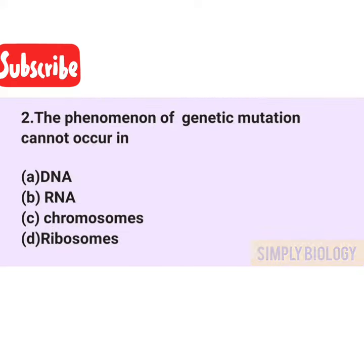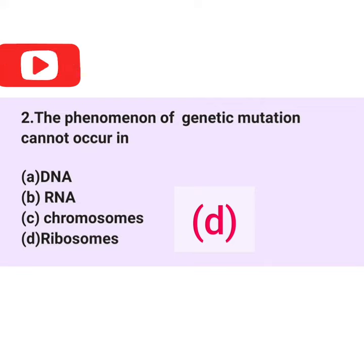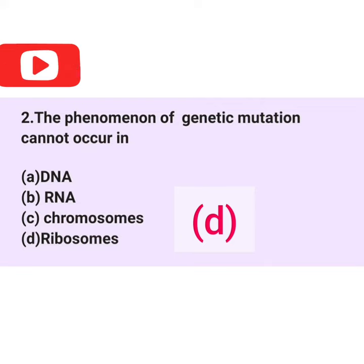Question 2. The phenomenon of genetic mutation cannot occur in — the answer is D: Ribosomes.